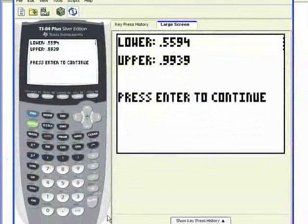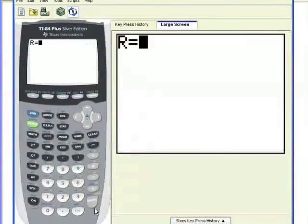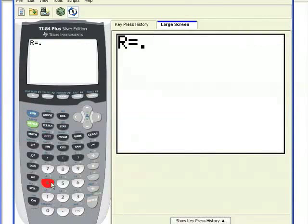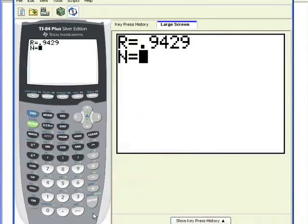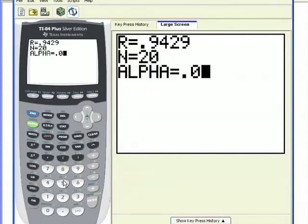.9429, whoops I missed, .9429, n was 20, and work with the same alpha, .05.